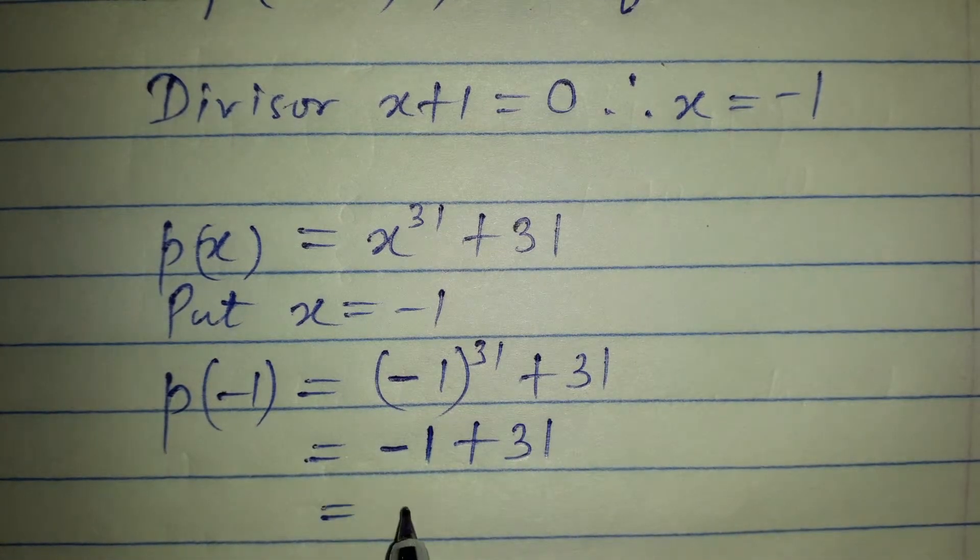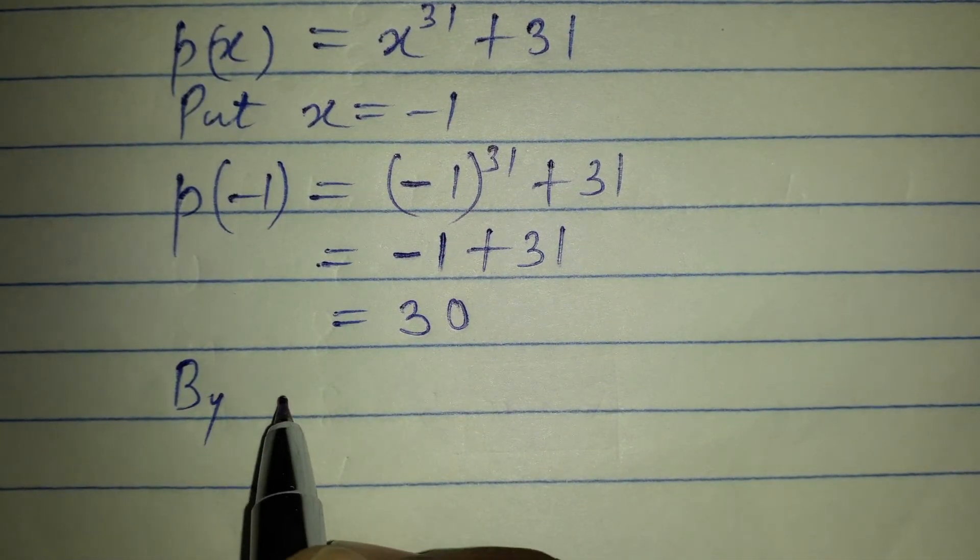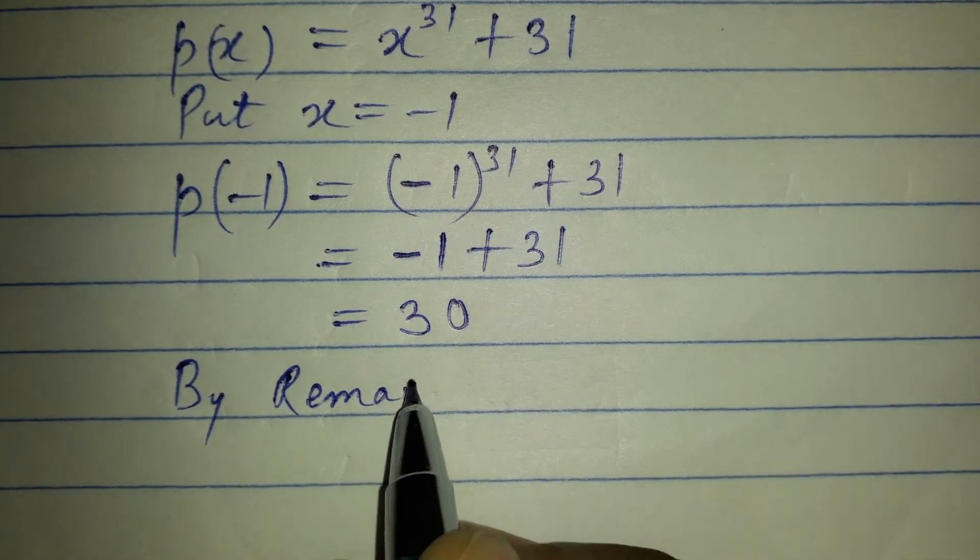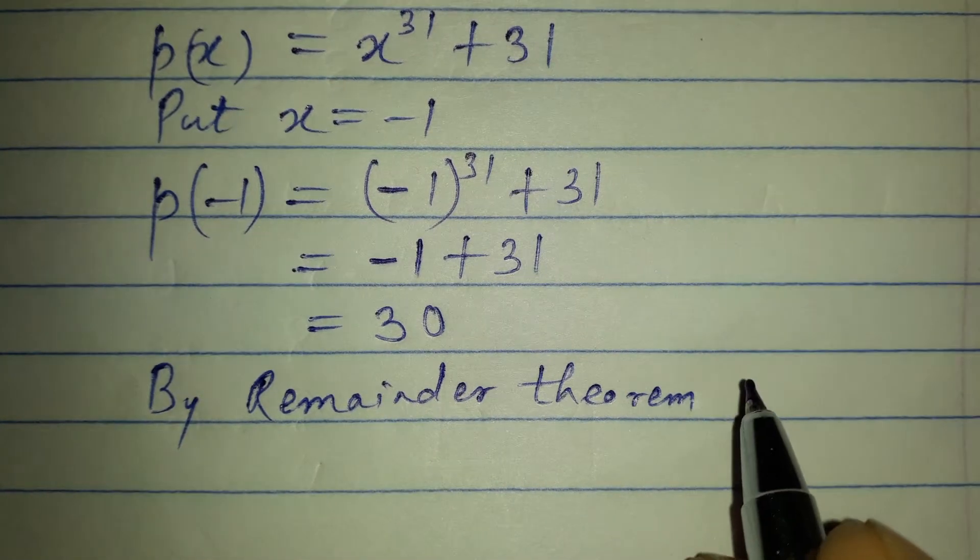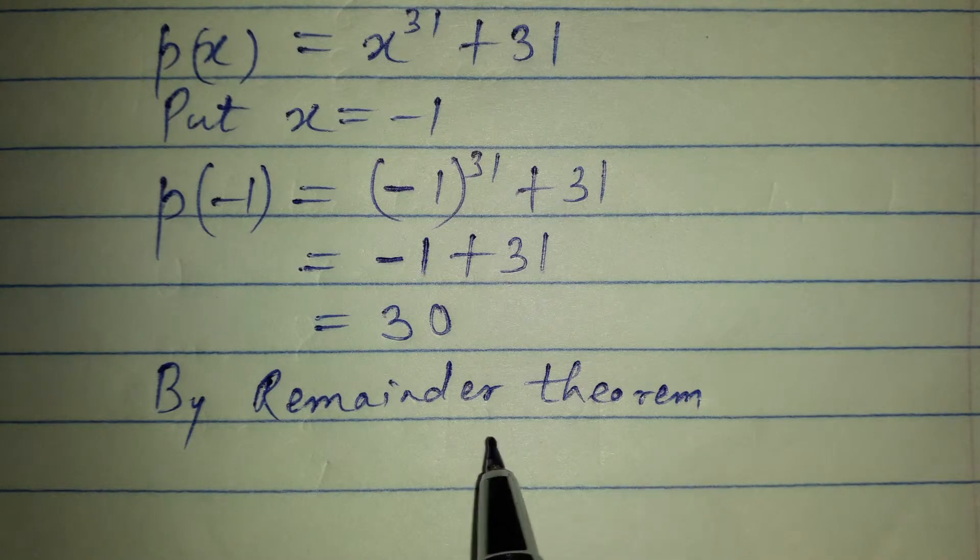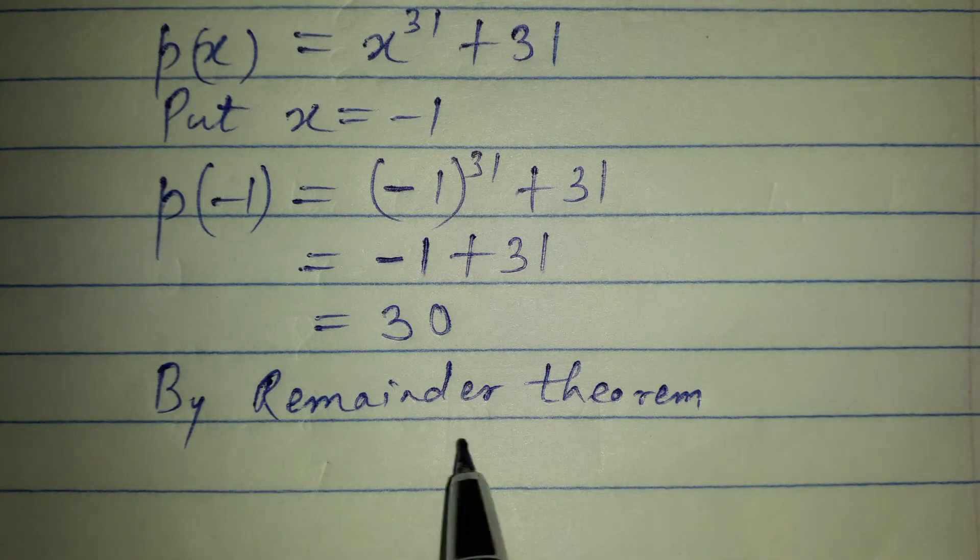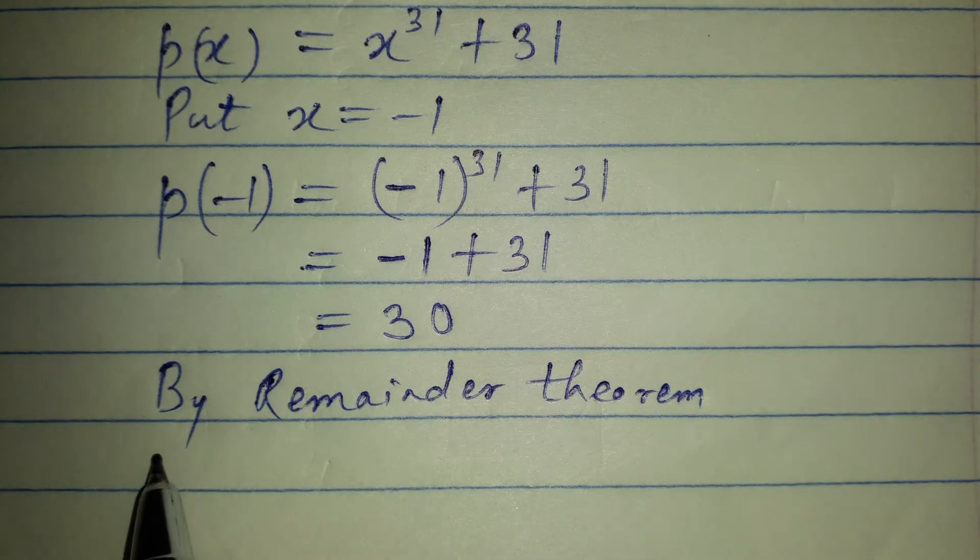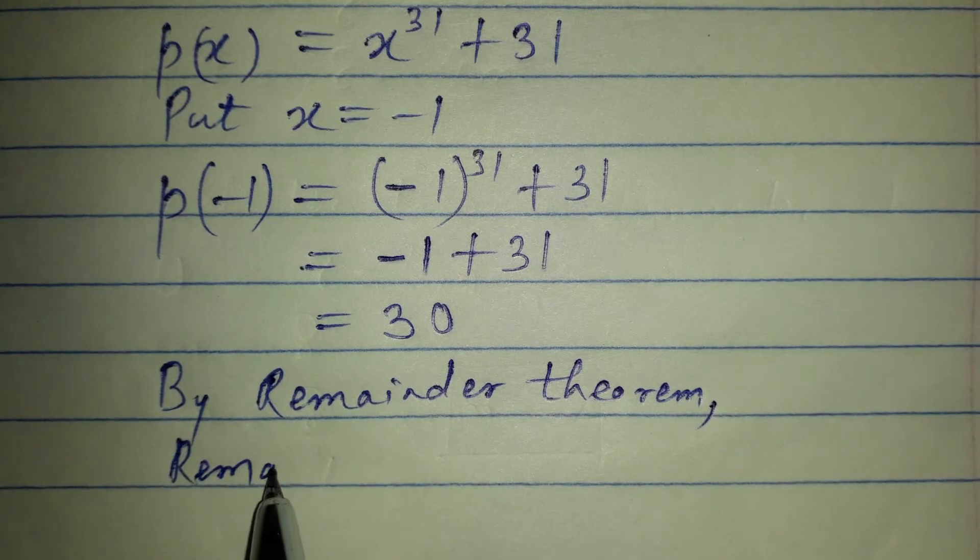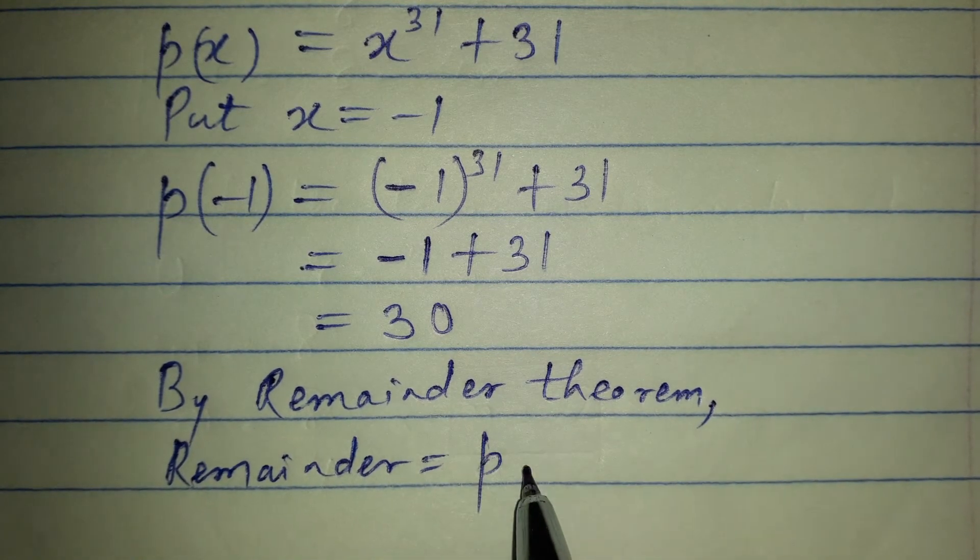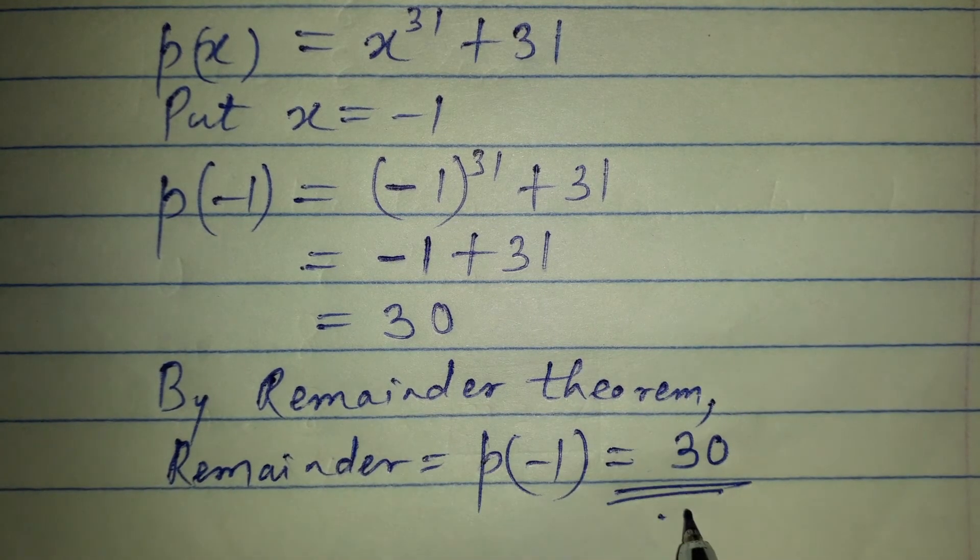By remainder theorem, we can say this by factor theorem also, because for finding the remainder, the remainder theorem and factor theorem are the same. By remainder theorem, the remainder is equal to p of minus 1, that is equal to 30.